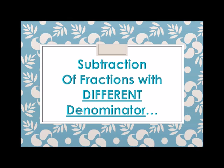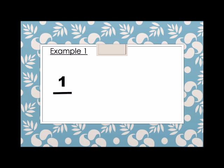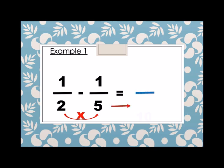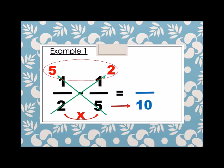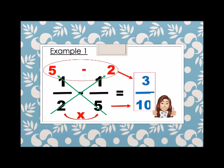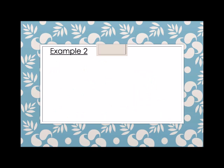Now, subtraction of fractions with different denominators. Example number 1, we have 1 half minus 1 fifth. Since we have different denominators, what do we do? We multiply. 2 times 5 is equals to 10. So the denominator of the answer is 10. Now we cross multiply: 2 times 1 is 2, and 5 times 1 is 5. So we subtract the numerators. 5 minus 2 is equals to 3. Therefore, 1 half minus 1 fifth is equals to 3 tenths.